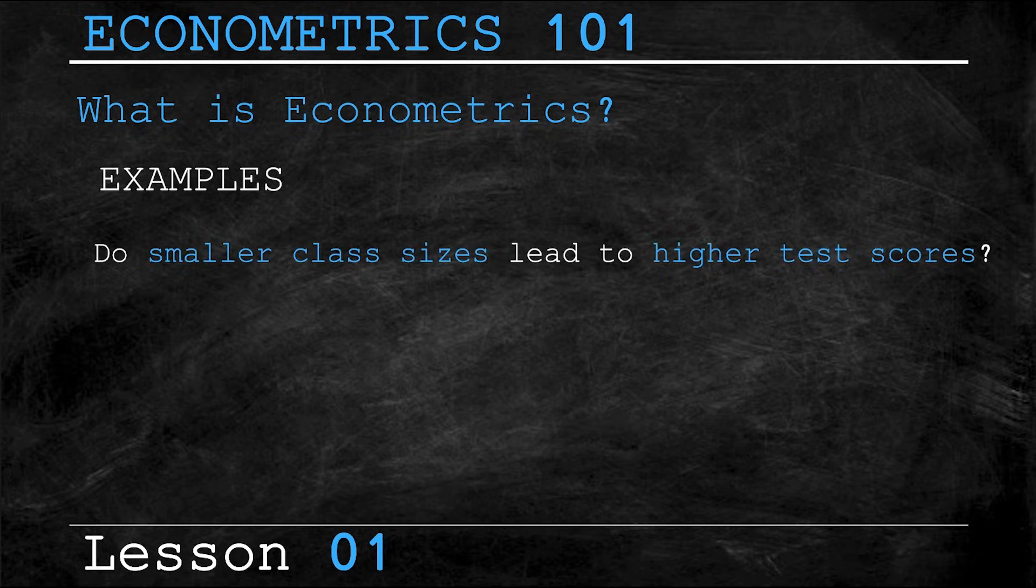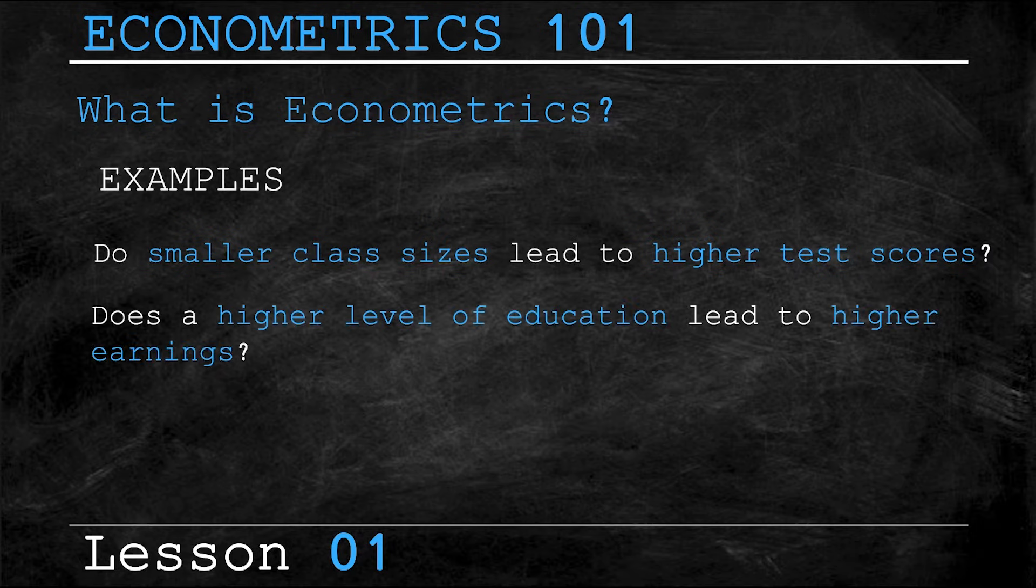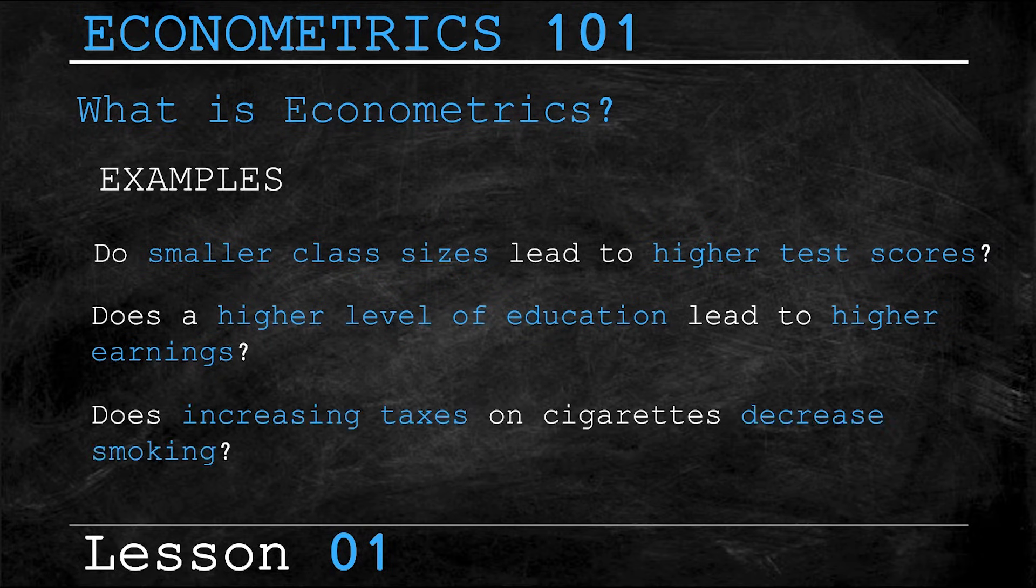Let's take a look at a couple of examples of questions that you could use econometrics to answer. Firstly, do smaller class sizes lead to higher test scores amongst students? Another question that we could ask is, does a higher level of education lead to a higher level of income or earnings? And our last example question is, does increasing taxes on cigarettes lead to a decrease in smoking?